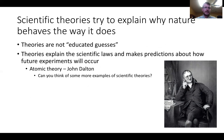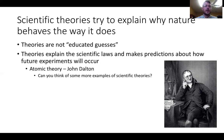From a hypothesis, we move to a scientific theory — the 'why' behind what we observe. Theories are not educated guesses; they explain scientific laws and make predictions about future experiments. John Dalton's atomic theory was proposed after Lavoisier's law of conservation of matter and explains why Lavoisier saw what he saw. Other examples include the theory of evolution, quantum theory, and game theory — all explain why something is the way it is.